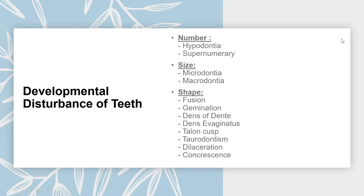This is the outline of today's presentation. We're going to touch on anomalies of number — hypodontia and supernumerary teeth — then move to disturbances of size: microdontia and macrodontia. We'll finish with anomalies of shape: fusion, gemination, dens invaginatus, dens evaginatus, talon cusp, taurodontism, dilaceration, and concrescence.